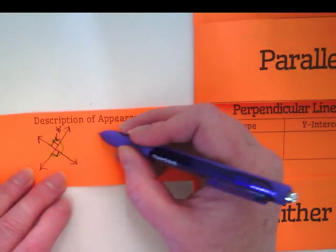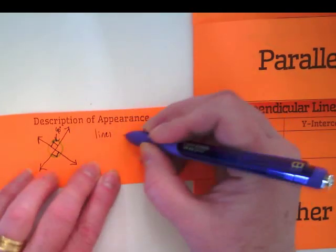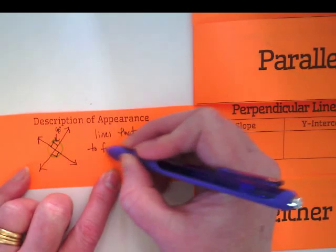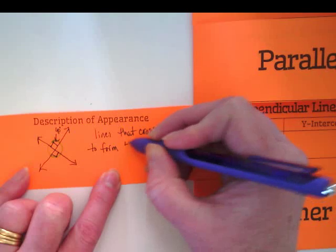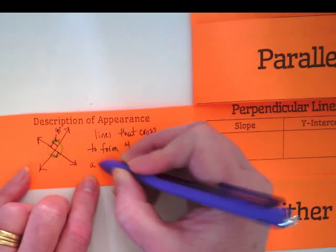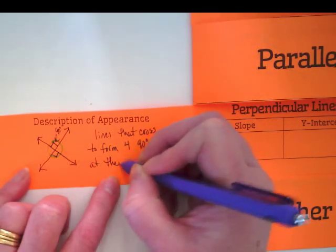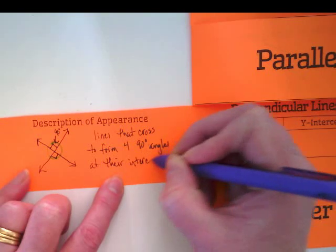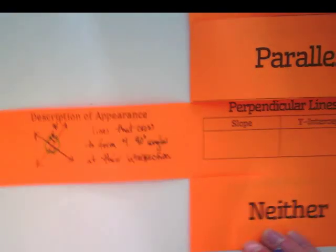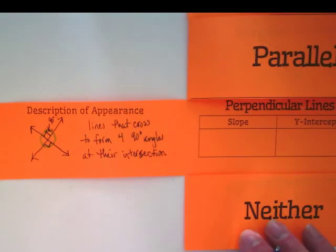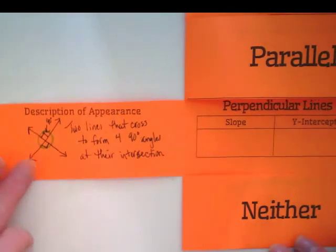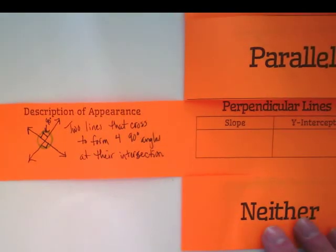So they are straight lines that cross to form four 90-degree angles at their intersection. I'm going to add the word two, two lines that cross to form four 90-degree angles at their intersection.